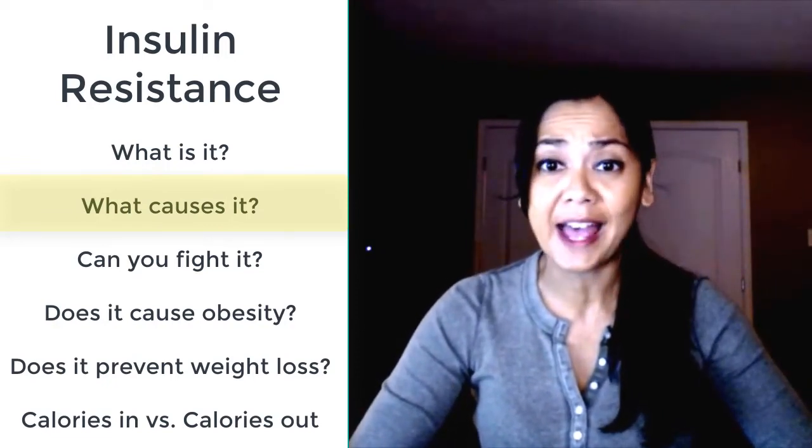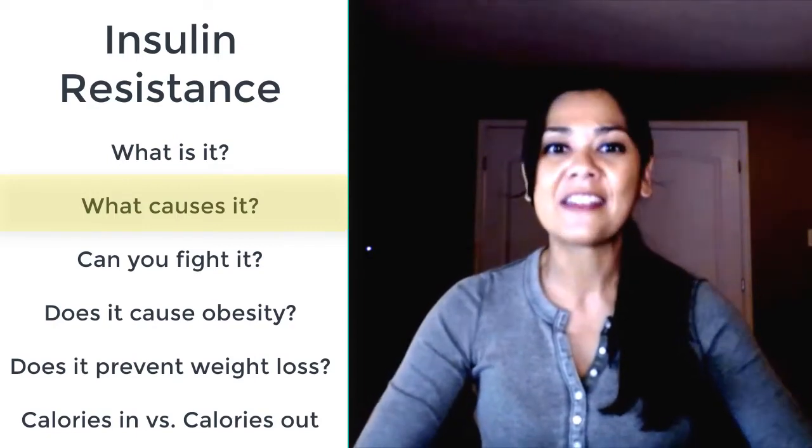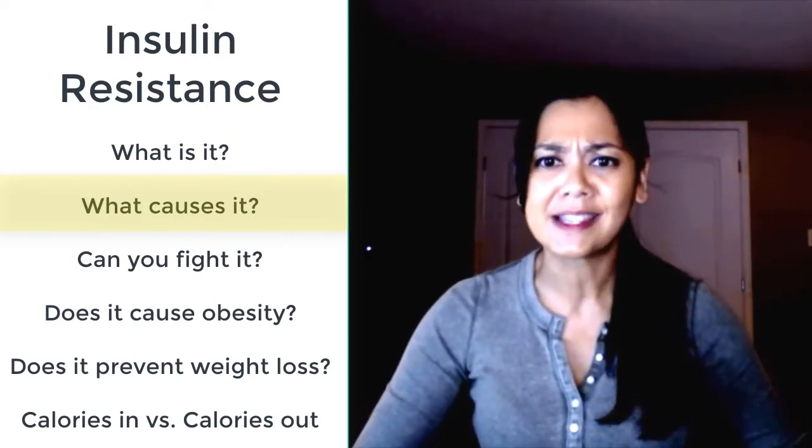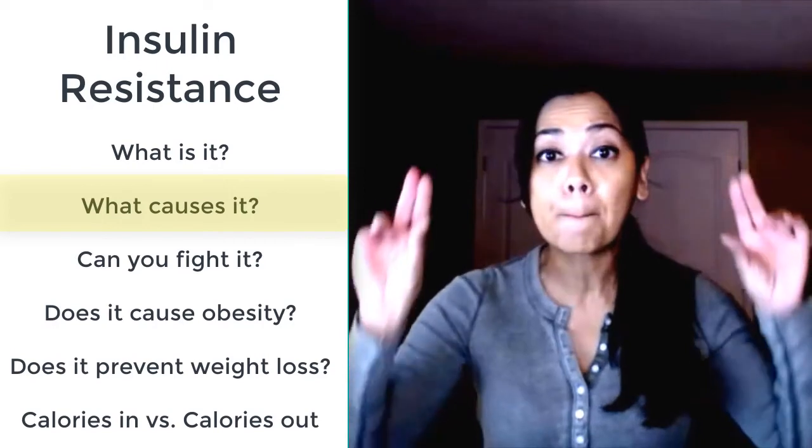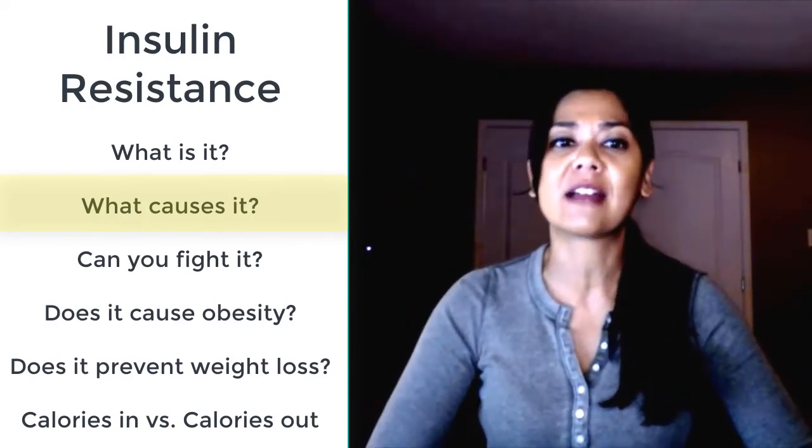This happens when you have high levels of visceral fat, and the visceral thing is the important part. This is the fat around your organs, not the subcutaneous or pinchable fat just under the skin. So you can actually look healthy on the outside and still have lots of visceral fat on the inside.